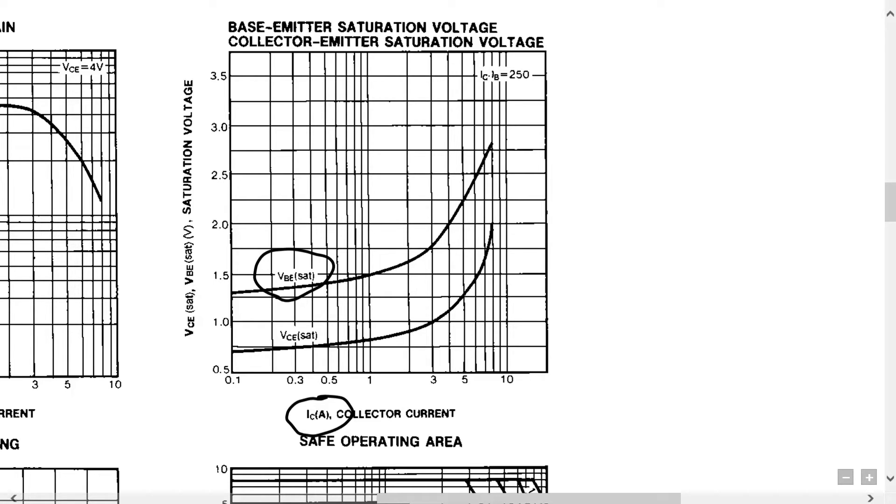So, for instance, if we have a half an amp that we're driving to our motor, we're going to have or need a base emitter voltage here of about 1.4 volts. And once we've put in 1.4 volts on the base emitter, we're going to see that our collector emitter voltage will be about 0.75 volts.